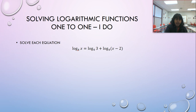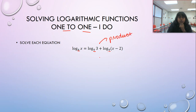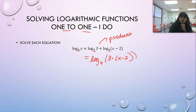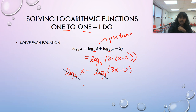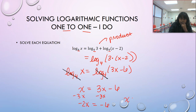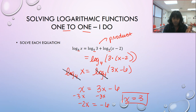Now we have logs on both sides with the same base, but it's not one-to-one — there are two logs on the right. Use the product rule to condense: log base 4 of 3 times (x minus 2) becomes log base 4 of (3x minus 6), equal to log base 4 of x. Cancel the matching bases: x equals 3x minus 6, giving negative 2x equals negative 6, so x equals 3.